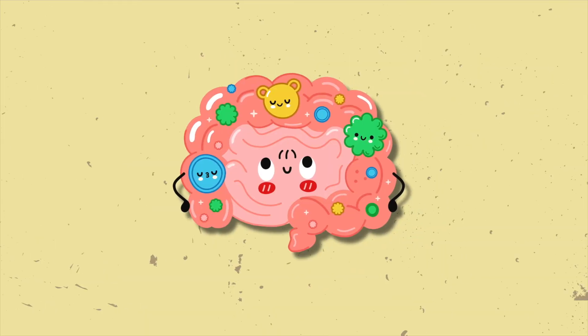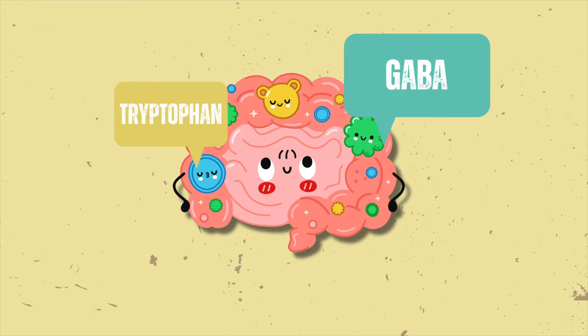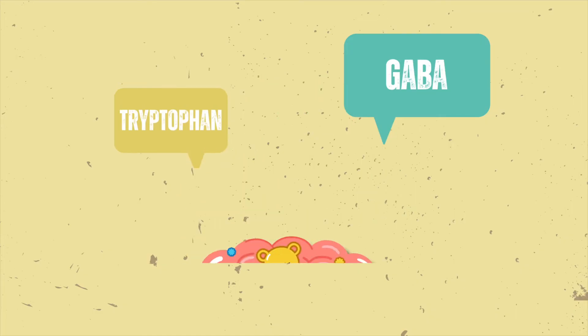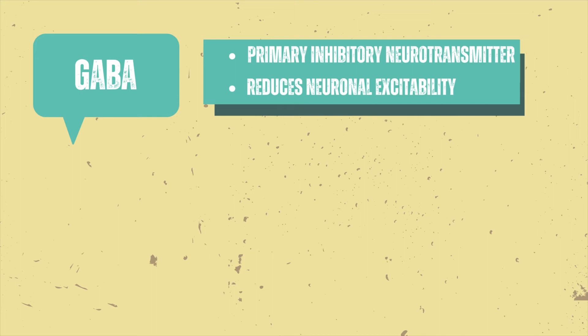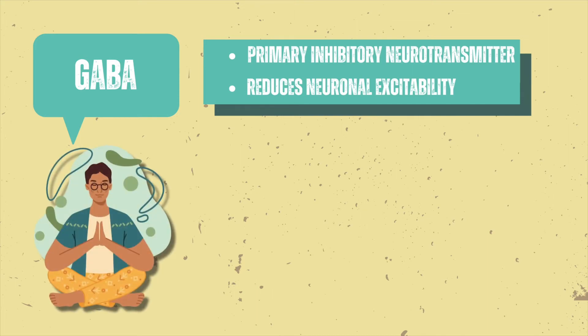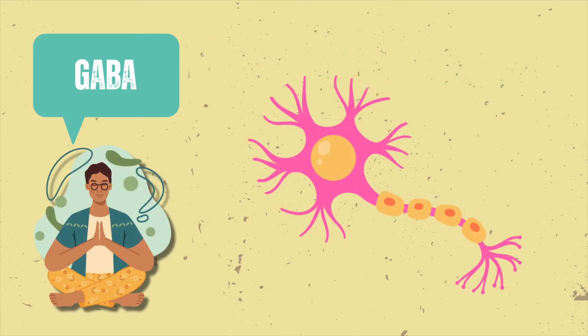In addition, gut bacteria impact mood regulation by producing neurotransmitters like gamma-aminobutyric acid, or GABA, and tryptophan. GABA, a primary inhibitory neurotransmitter, reduces neuronal excitability, promoting calmness. This occurs when GABA binds to receptors on neurons, allowing negatively charged chloride ions to enter, stabilizing membrane potential and preventing overstimulation.